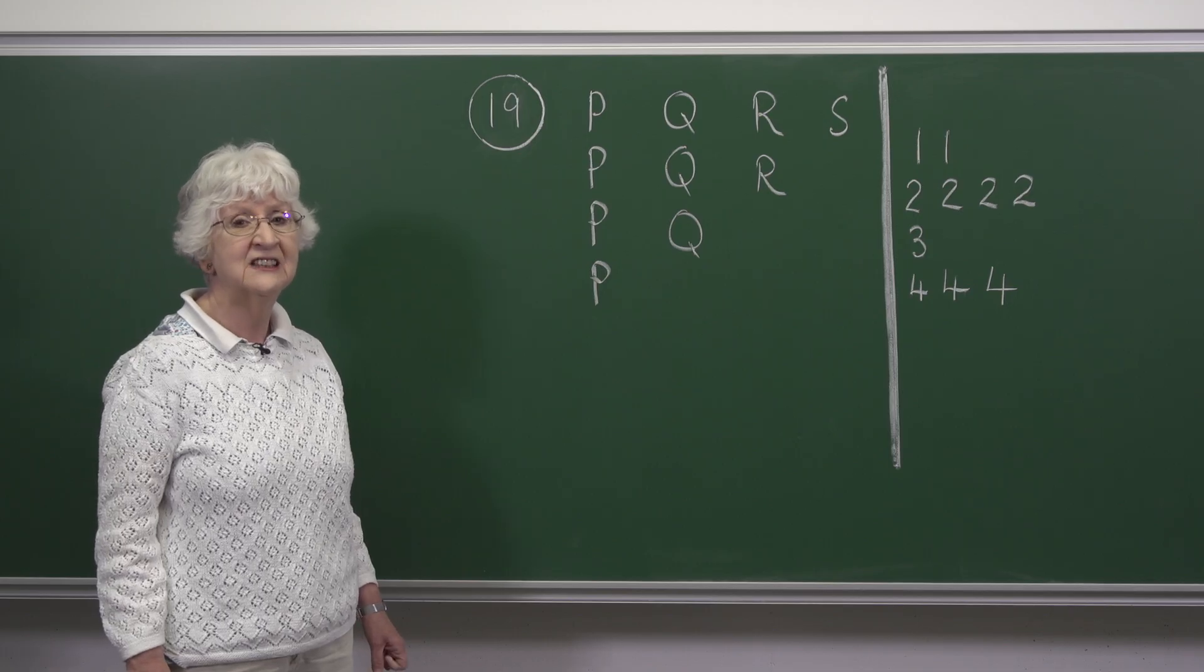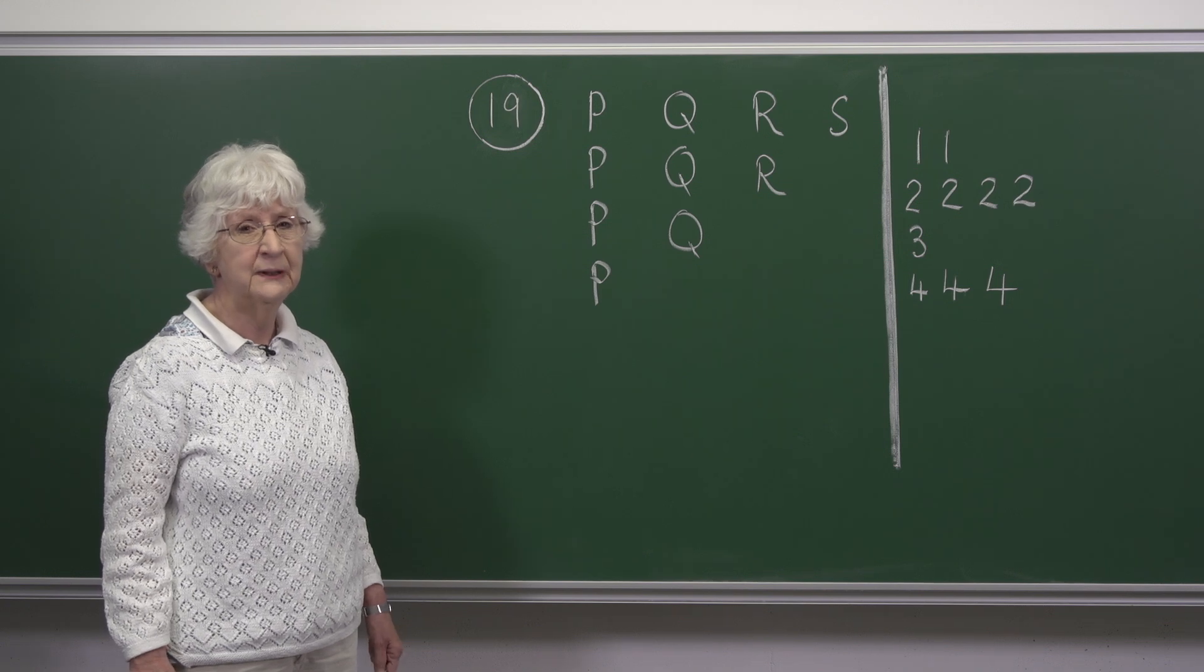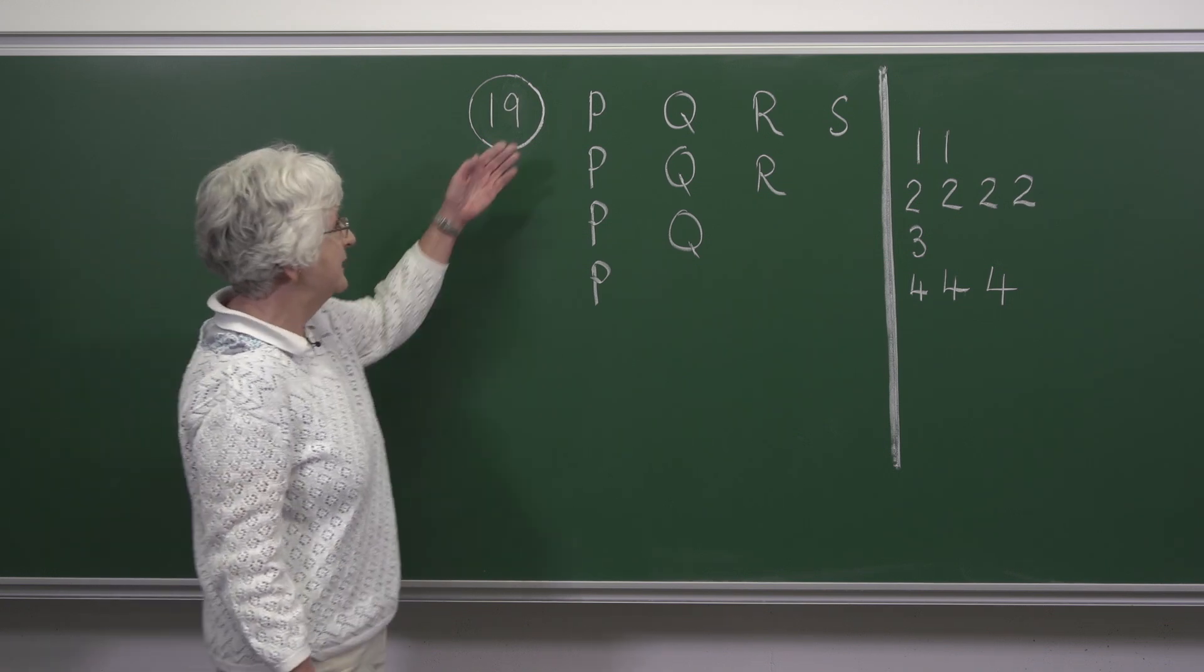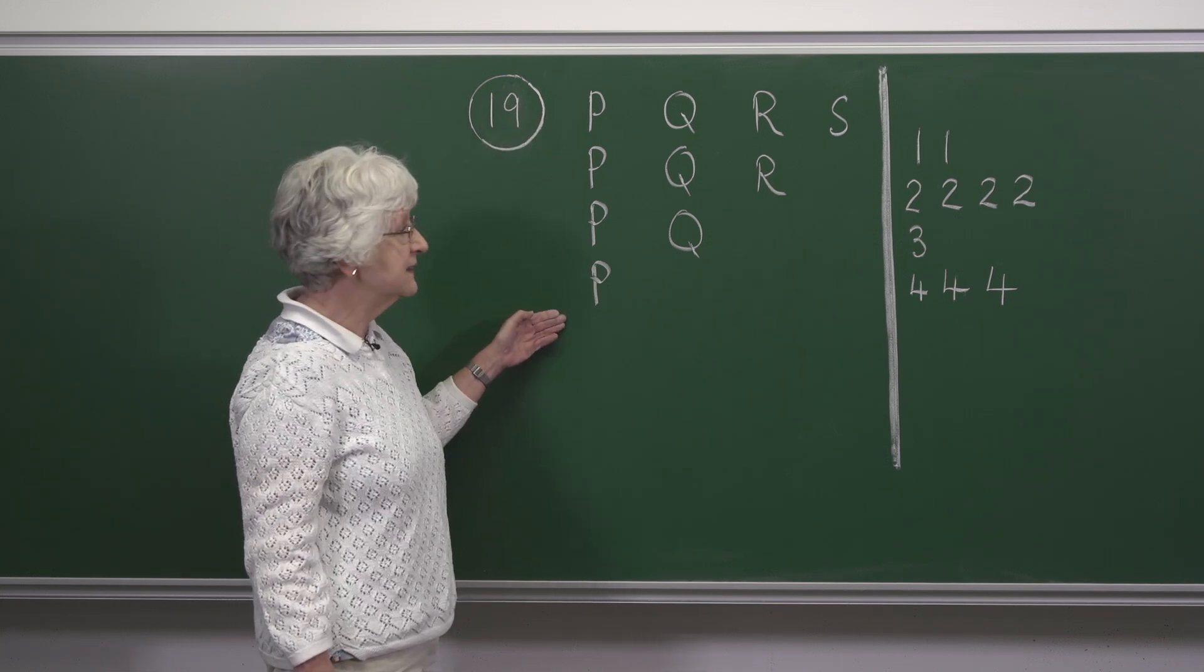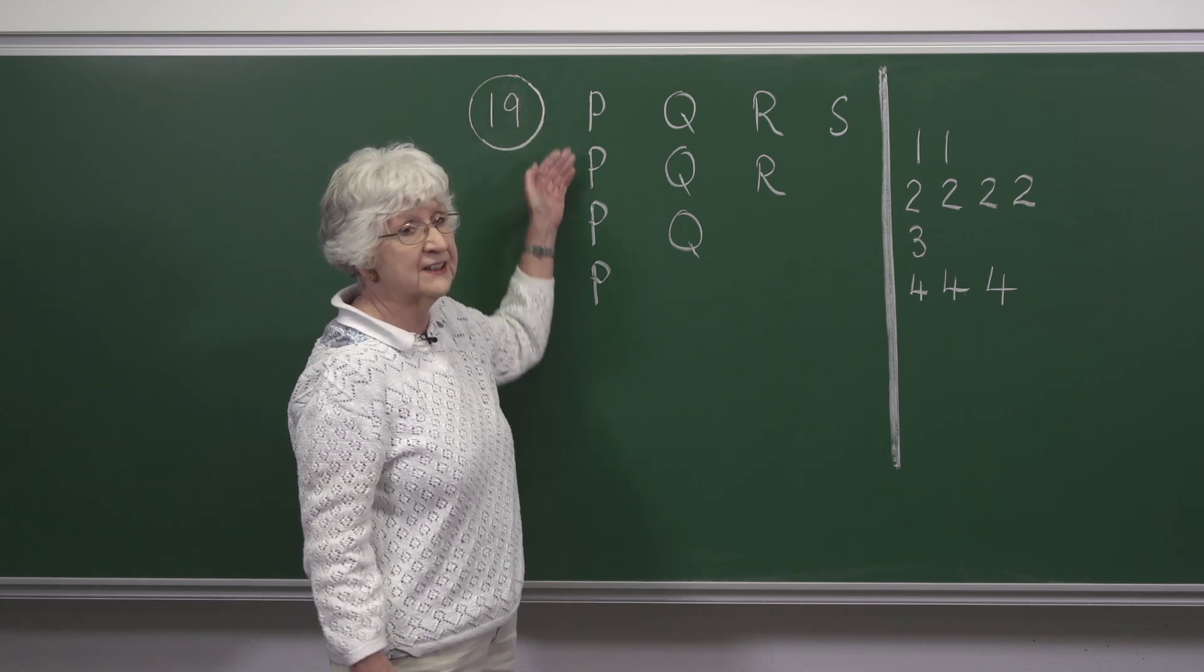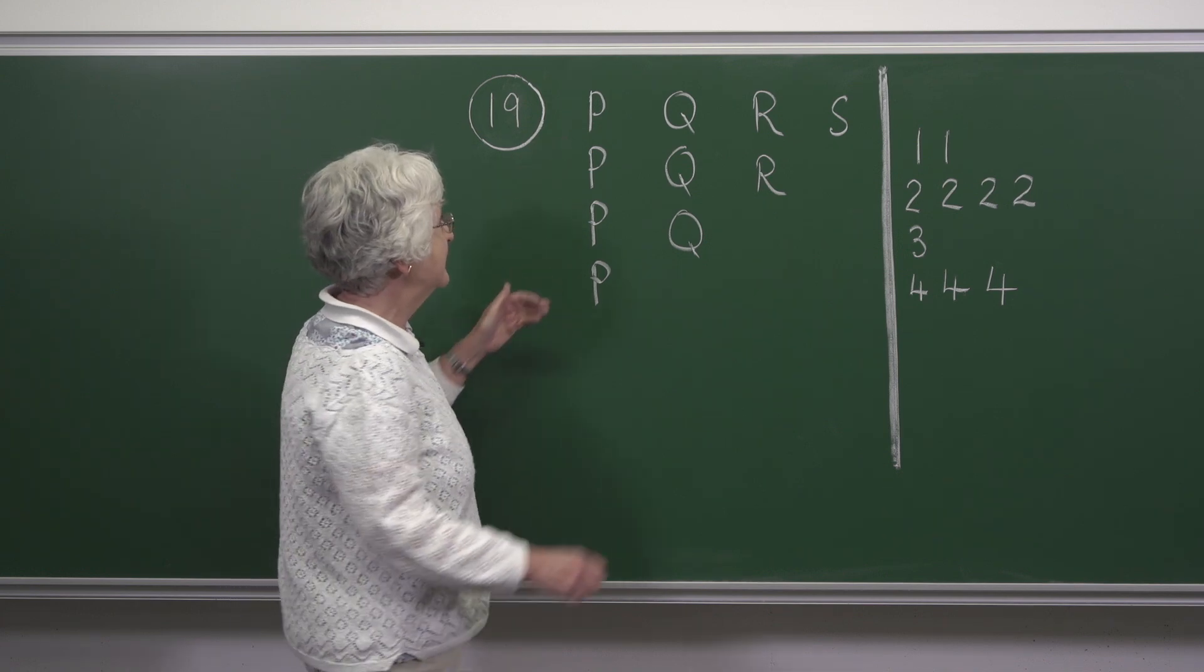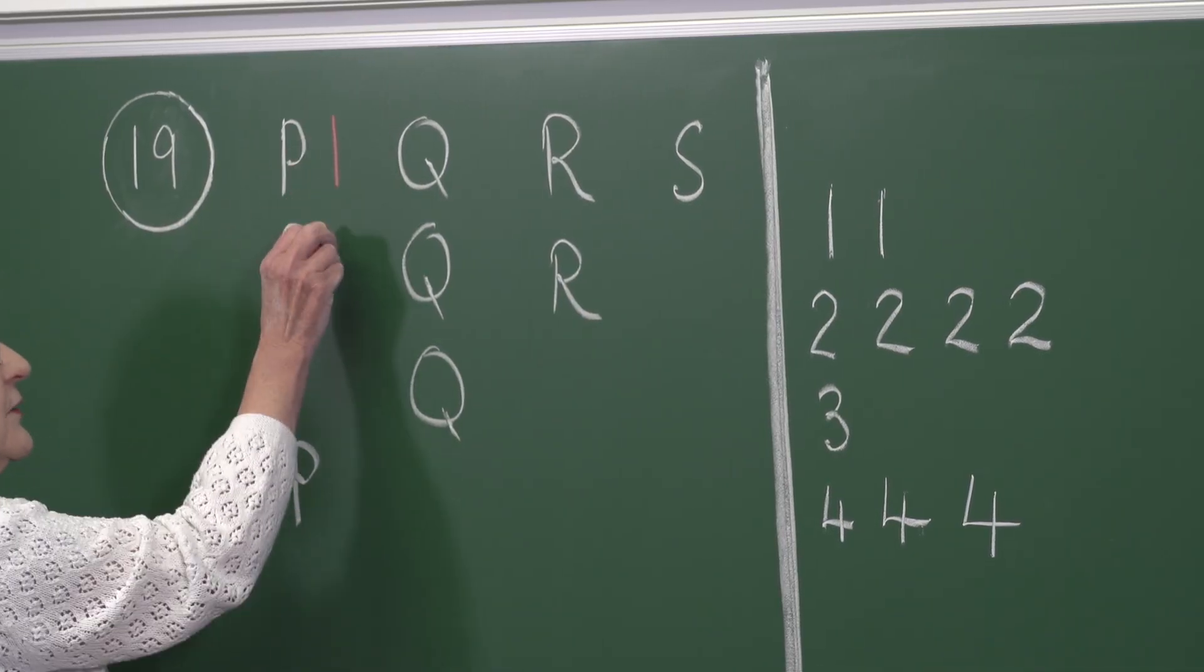In this question, we have 10 letters which are to be paired with 10 numbers. Now we see we have four P's, so because each of the pairings has to be different, P has to be paired with each of the numbers.